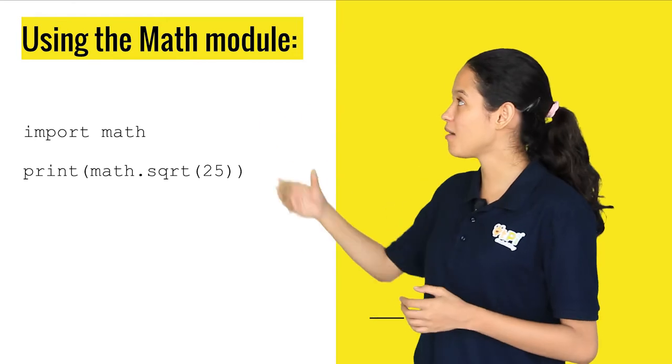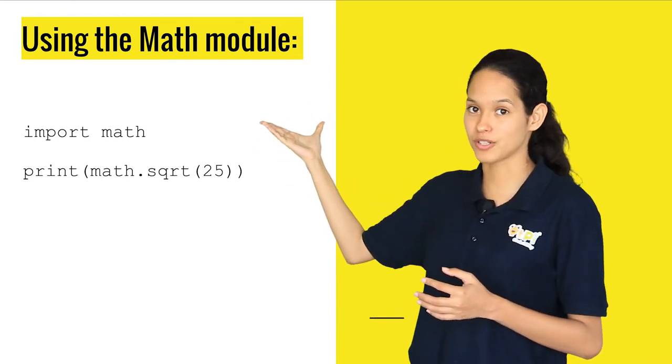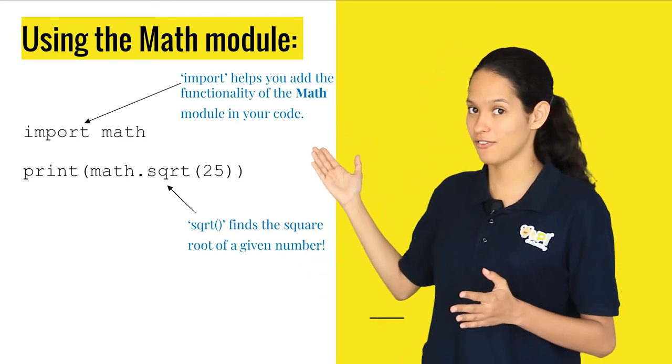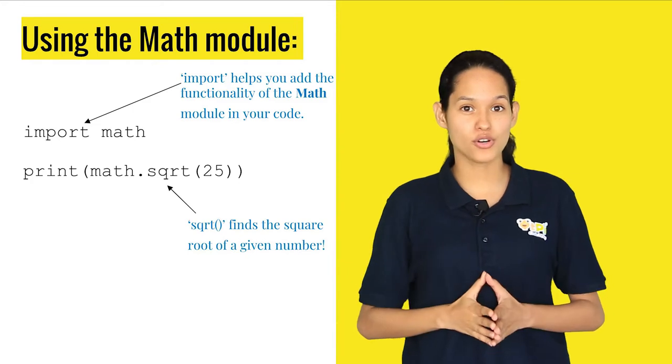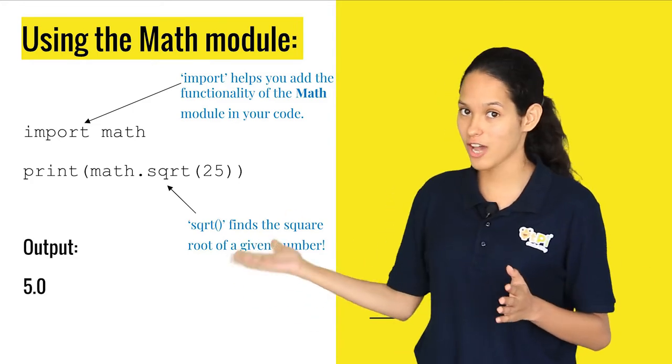In this example, we write math.sqrt function. The sqrt function finds the square root of the number, here it's 25. You can try this code and see the output. In this case, the output is 5.